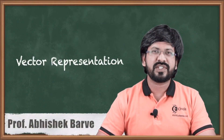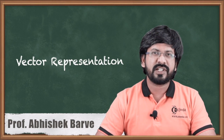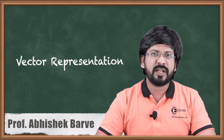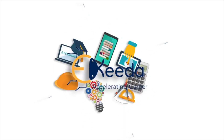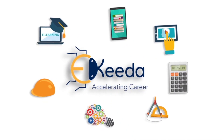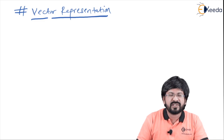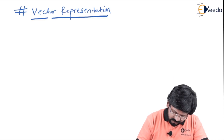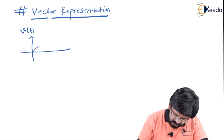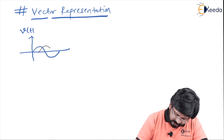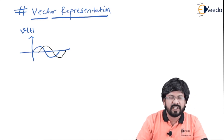Hello friends, in this video we will see vector representation. Vector representation means how AC values can be represented in different forms. Vector representation means the different forms in which I can show alternating values. Alternating values means alternating current or alternating voltage. For example, I can have alternating voltage V(t) shown in different ways.